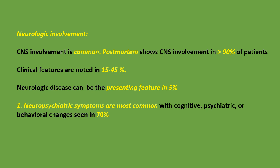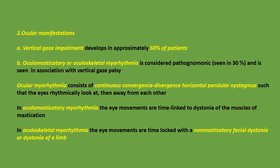Clinical neurologic features are noted in 15 to 45% of patients; neurologic disease can be the presenting feature in 5%. Neuropsychiatric symptoms are most common, with cognitive, psychiatric, or behavioral changes seen in 70%. Vertical gaze impairment develops in approximately 50% of patients. Oculomasticatory or oculoskeletal myorrhythmia is considered pathognomonic, seen in 30% of patients, and usually occurs in association with vertical gaze palsy.